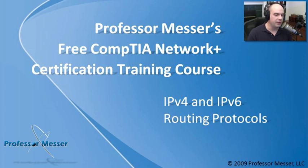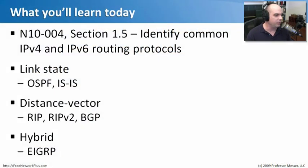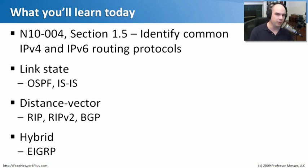Welcome to this module of Professor Messer's Free CompTIA Network Plus Certification Training Course. I'm James Messer. In this module, we're going to talk about IPv4 and IPv6 routing protocols, from the Network Plus exam objective 10-004, Section 1.5, where we need to identify common IPv4 and IPv6 routing protocols. There are three different categories: link state, distance vector, and hybrid routing protocols, and we'll step through what the similarities and differences are.